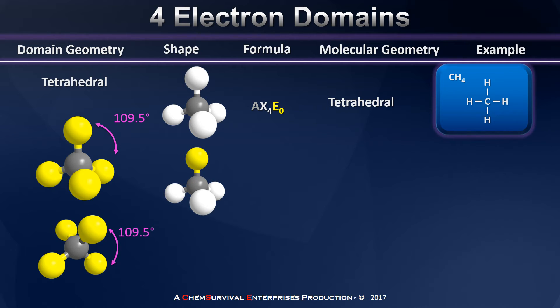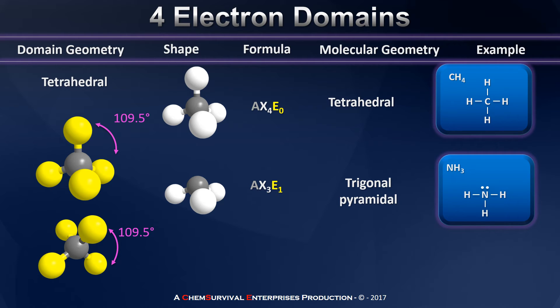But we now have to consider the possibility that there are lone pair electrons around the central atom. What if we have a molecule with a formula AX3E1? The lone pair electrons are still pushing down on those bonding electron domains. When we determine the molecular geometry, we leave its influence but remove its appearance. We have a triangular-shaped arrangement of bonding domains, but the central atom is up above the plane of that triangle — so we call this trigonal pyramidal. An example is ammonia, in which the nitrogen has three bonding electron domains and one lone pair, which pushes those NH bonds down and out of the plane of the molecule.